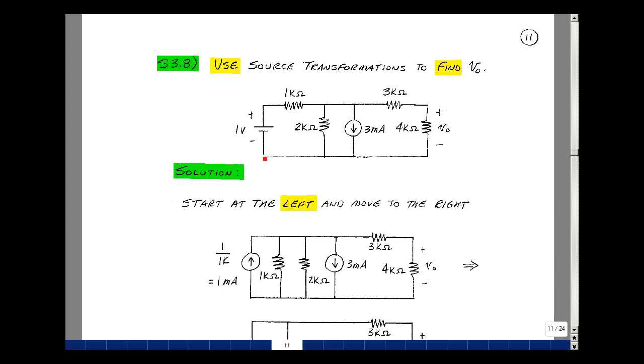So here we've got a voltage source in series with a resistance. Let's source transform that. That'll be a current source in parallel with this resistance, in parallel with these two nodes. The current source is 1 volt divided by 1k, so 1 divided by 1k is 1 milliamp. The arrow is going to point towards where the plus sign was.